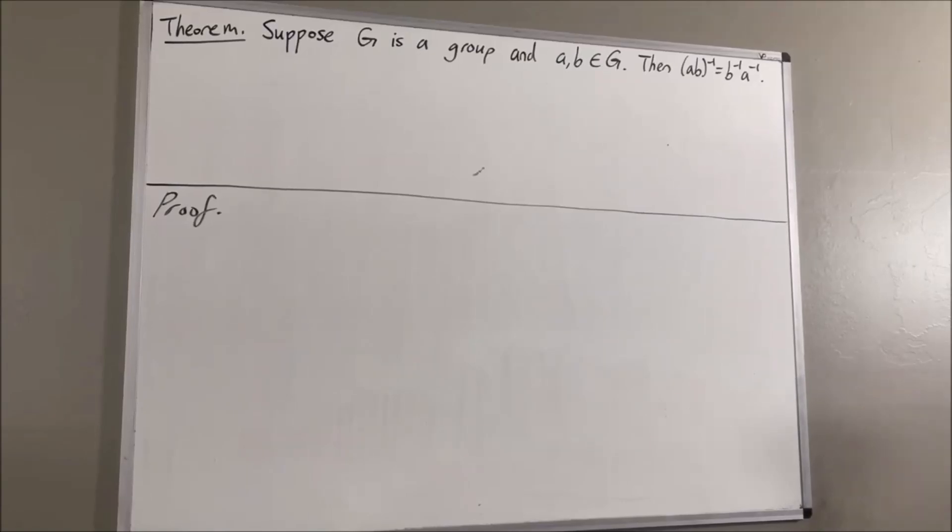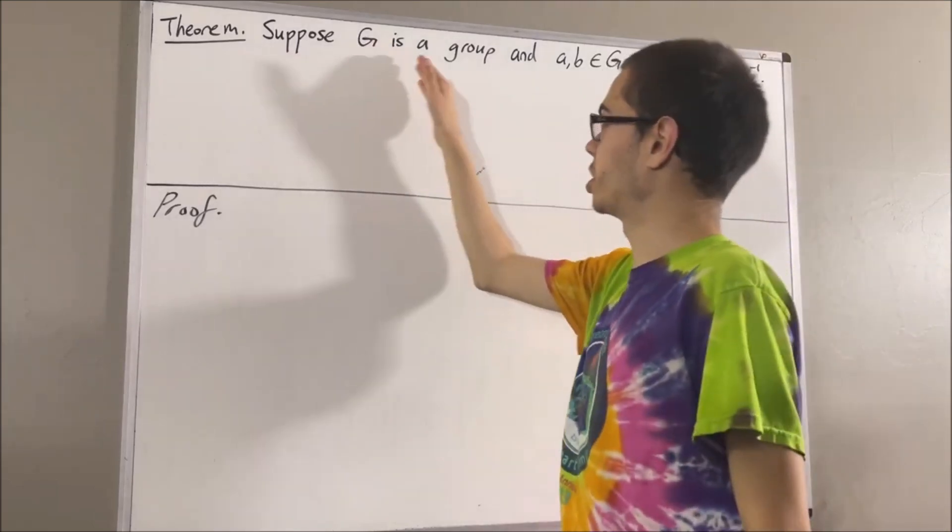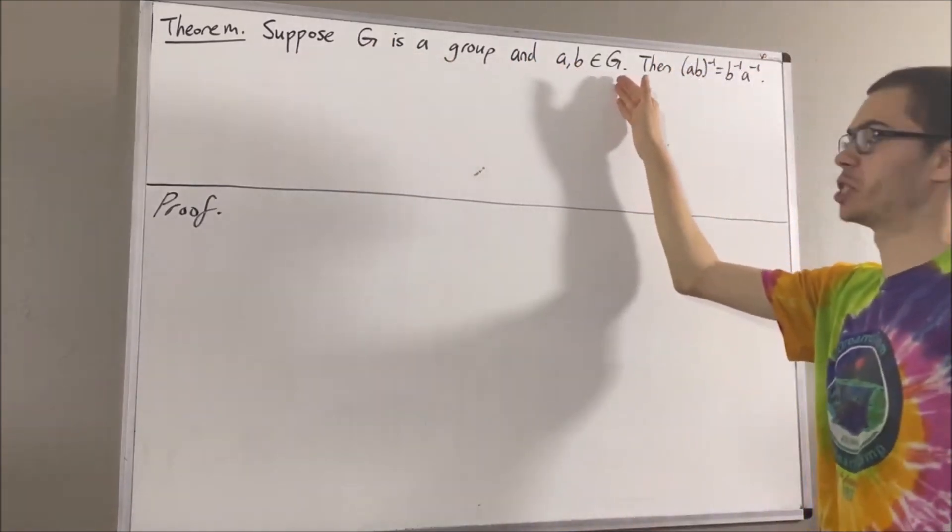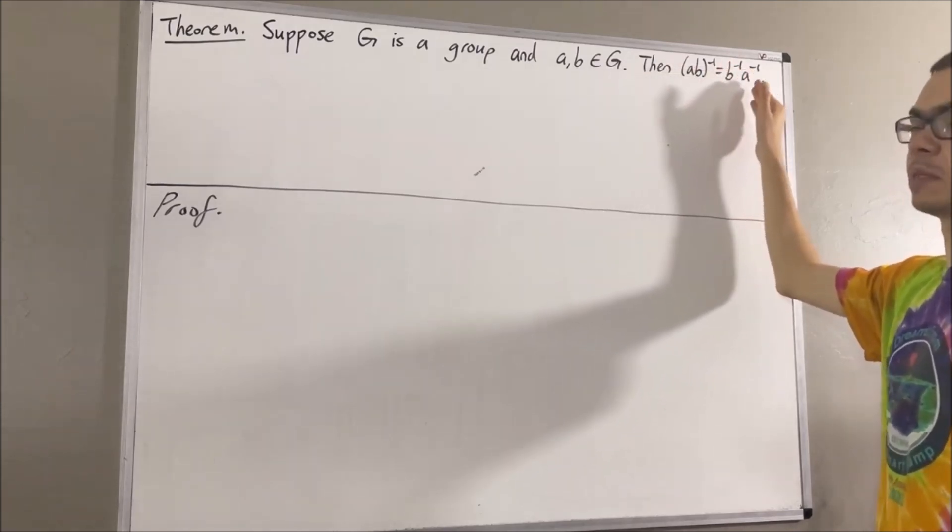Hello! In this video, we are going to prove the following theorem. Suppose G is a group and A and B are elements of G. Then, the inverse of AB is equal to B inverse times A inverse.